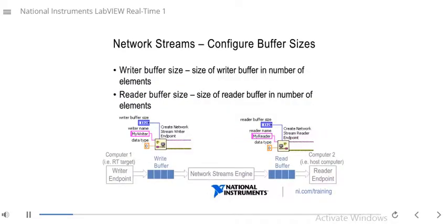When you first create your writer and reader endpoints, you should also configure the buffer sizes. On both endpoint functions there is a place to configure the writer buffer size or the reader buffer size. In the graphic showing how a network stream works, there is a write buffer portion and a read buffer portion, with the corresponding function inputs shown above. Make sure you configure the writer buffer size and the reader buffer size before moving on.